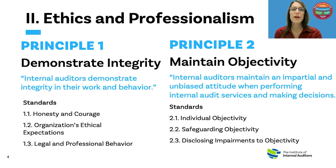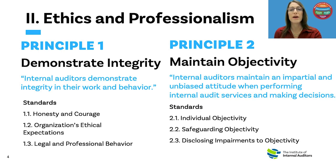Standard 2.3 describes requirements for disclosing impairments to objectivity and requirements related to chief audit executive roles and responsibilities beyond internal auditing. These concepts are captured in standard 2.3 in the ethics domain, but further elaborated in the governing domain because the standards require the board to implement oversight activities to safeguard objectivity when the CAE is in roles beyond internal auditing.